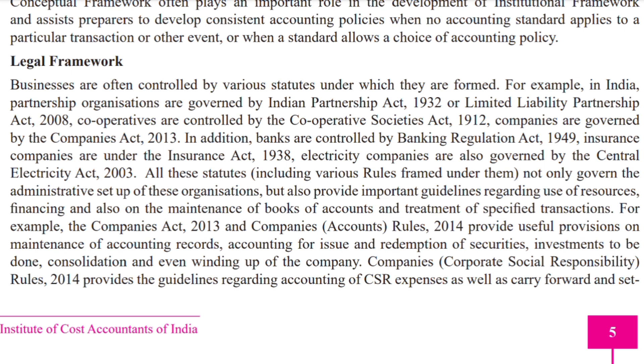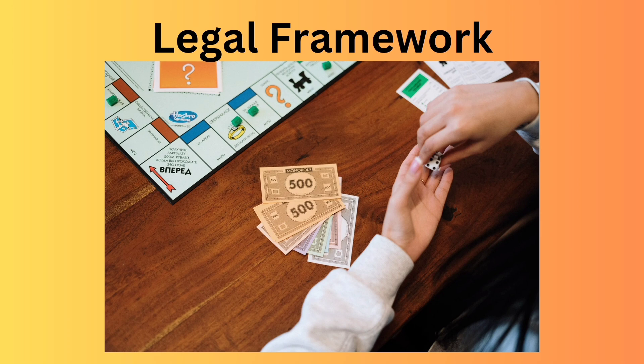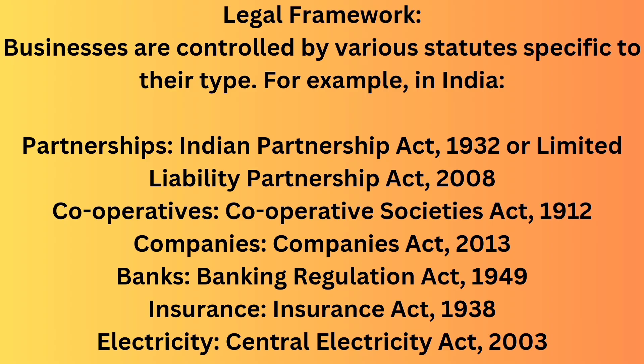Next, I'm going to explain legal framework. So imagine you're playing a board game like Monopoly. Each type of game has its own set of rules that tell you how to play, what you can and cannot do, and how to win or lose. In the same way, businesses are like different types of games and each has their own rulebook that tells them how to operate. In India, these rule books are called statutes, and they are specific to the type of business. For example, partnership firms follow the Indian Partnership Act 1932, or for LLPs, the Limited Liability Partnership Act 2008. These acts are like a guide on how partners should work together, share profits or losses, and what happens if a partner wants to leave or if a new one wants to join — they have to follow these rules under this act.